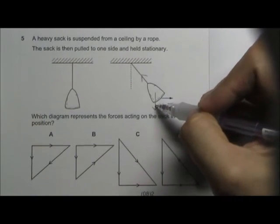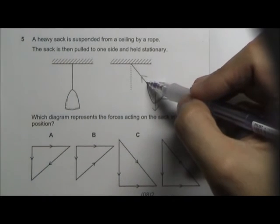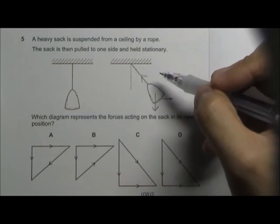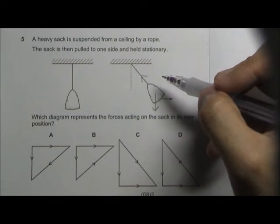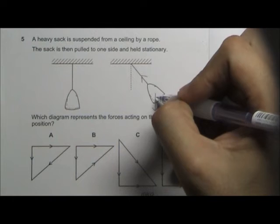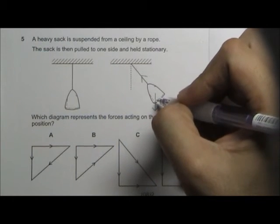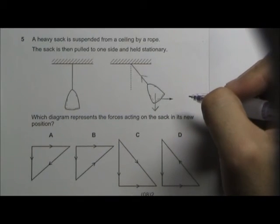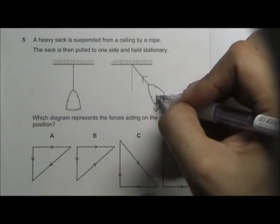if you line up all the forces using the tip-to-tail method, it should form a closed loop and it should go back to the original point. So now let's try to arrange these forces using the tip-to-tail method.